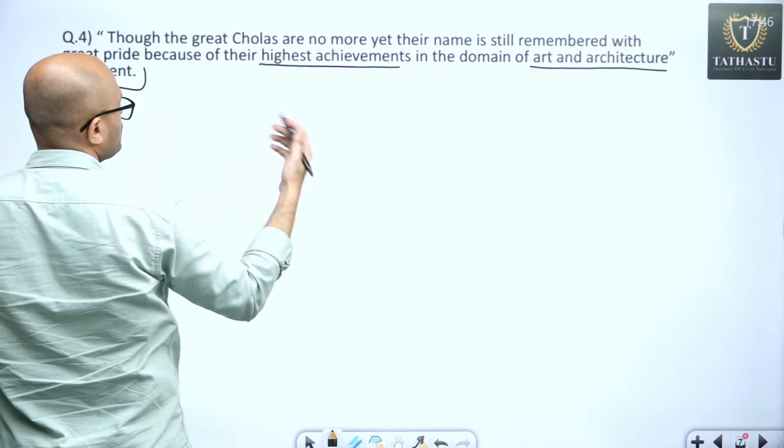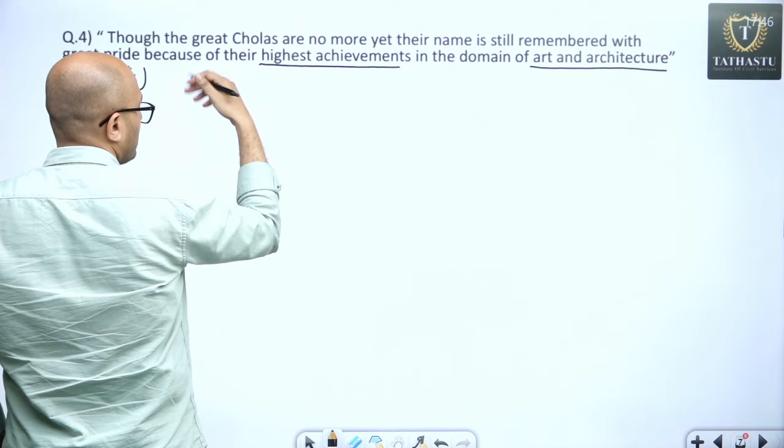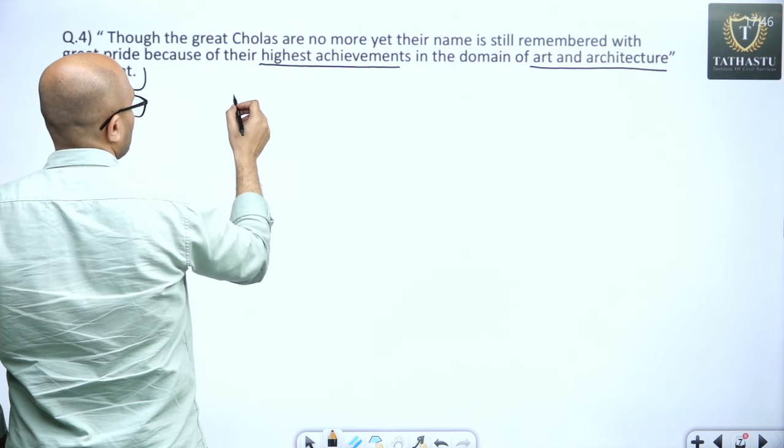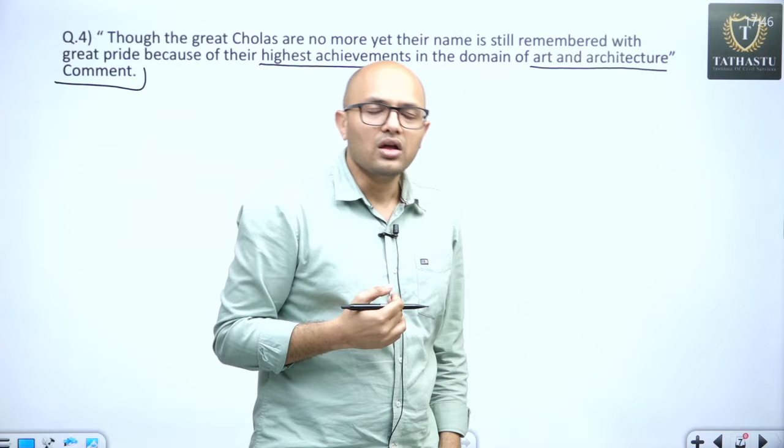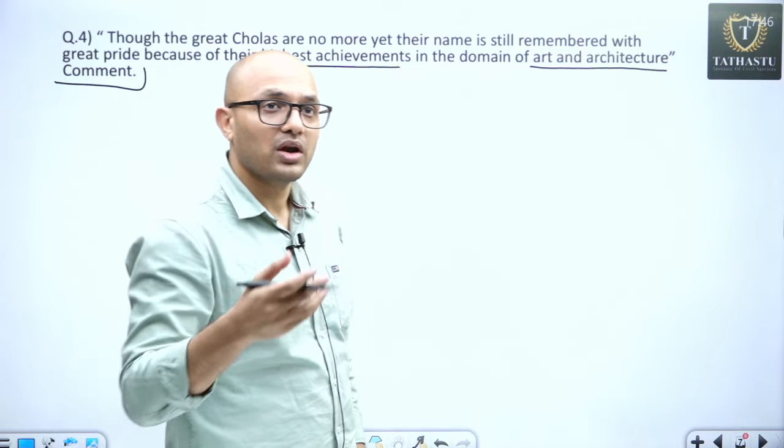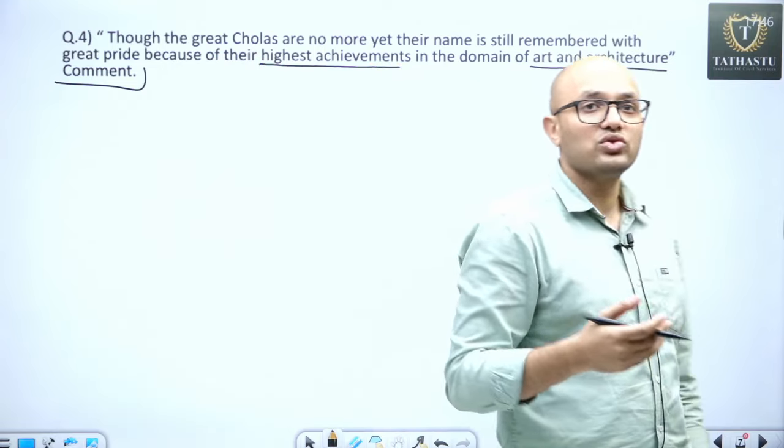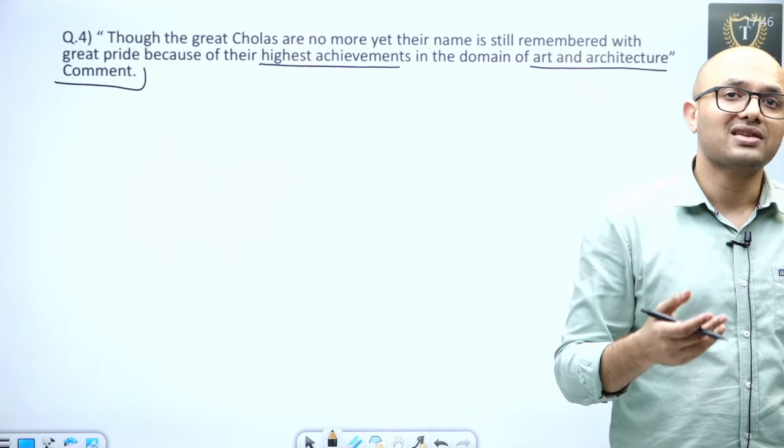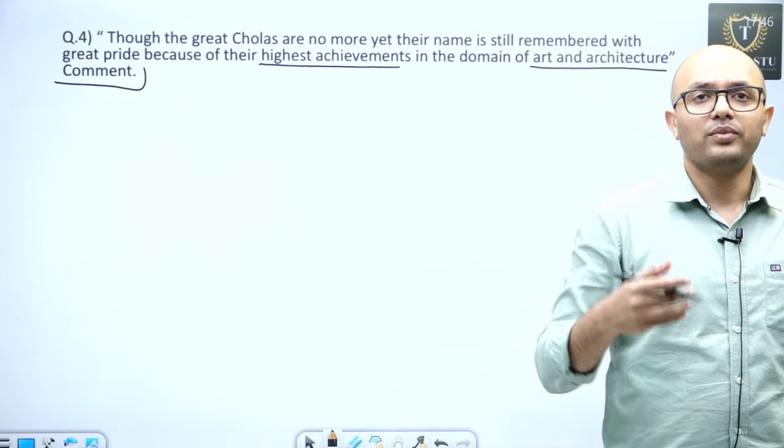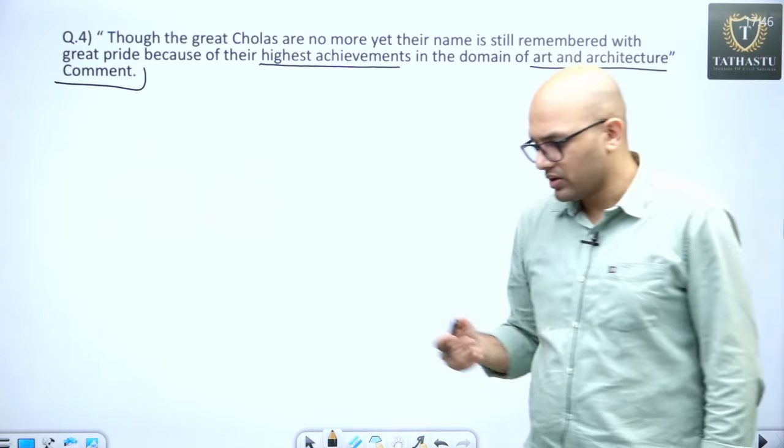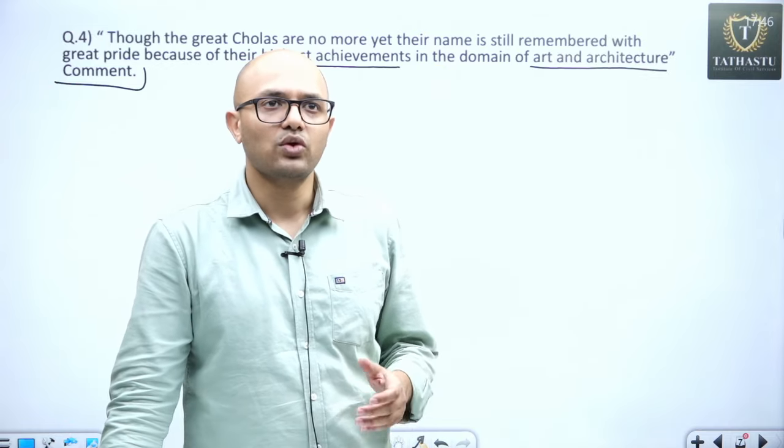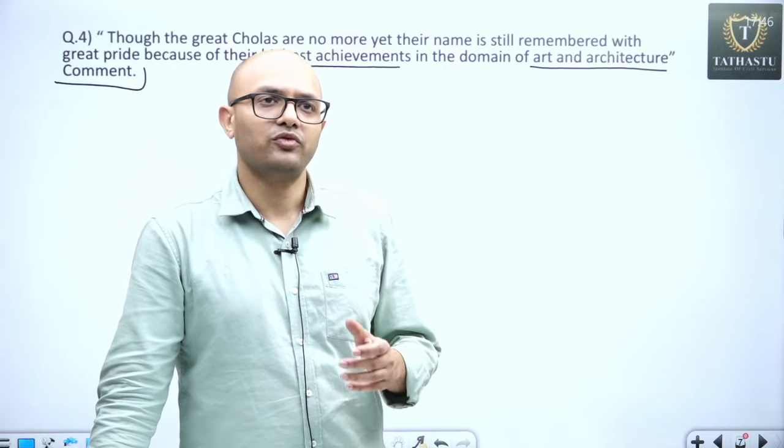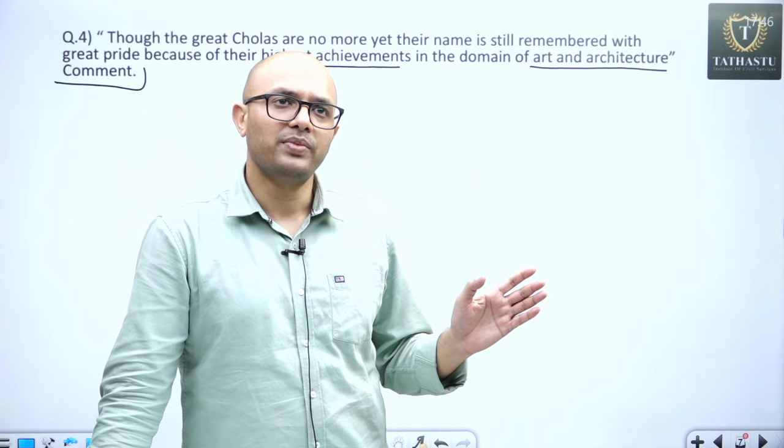First of all Cholas started their prominence with the, we have come to know about the Uttar Merur inscription, and from there Cholas from early 10th century, power of Chola started increasing and in 10th century the tradition of Dravida temple style architecture was already there because of the earlier role played by the Pallavas.